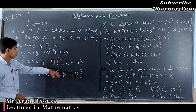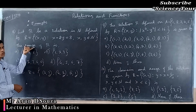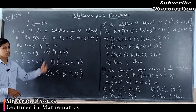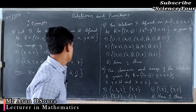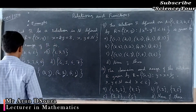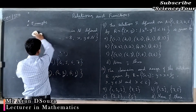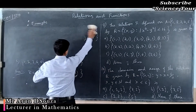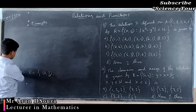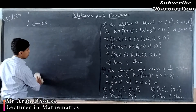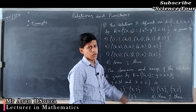The domain is {2, 4, 6}. Since we need the range, the right option is option B. Let us move on to example 9. You have the relation R defined on the set A = {1, 2, 3, 4, 5}, where |x² − y²| < 16.